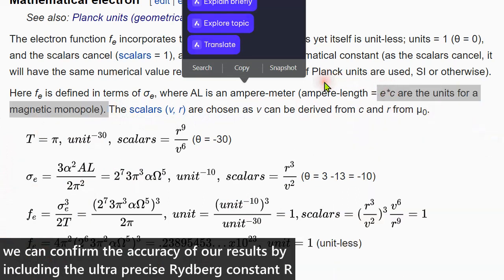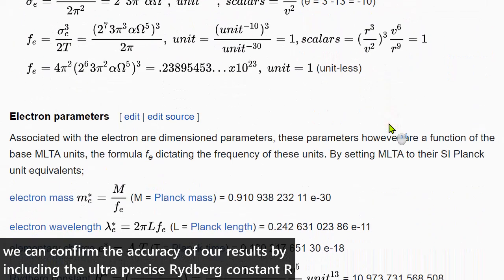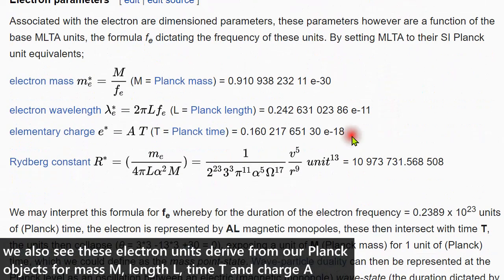We can confirm the accuracy of our results by including the ultra precise Rydberg constant. We also see that these electron units derive from our Planck objects for mass, length, time and charge.